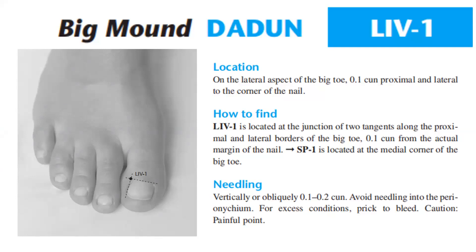Spleen 1 is located at the medial corner of the big toe. Needling vertically or obliquely 0.1 to 0.2 cun. Avoid needling into the periosteum. For excess conditions, prick to bleed. Caution: painful point.